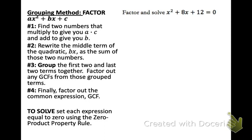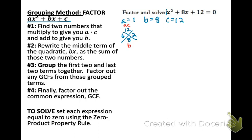Here are the steps, and we're going to do an example as we go. First, make sure your quadratic is in general form: ax squared plus bx plus c, equal to zero if there's an equal sign. Then pick out the a, b, and c coefficients. Step one: find two numbers that multiply to give you a times c and add to give you b. I use a little x graphic to help organize — the top number is a times c, the bottom is b. So 6 times 2 gives 12, and 6 plus 2 gives 8.